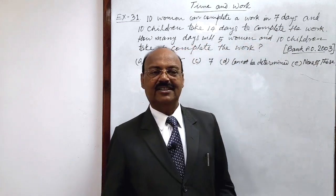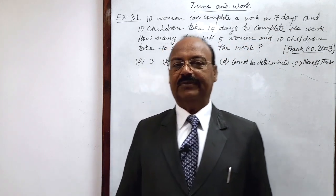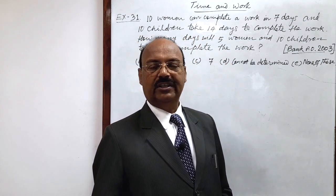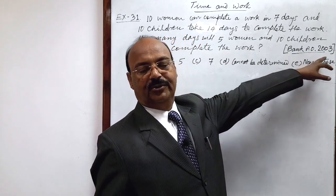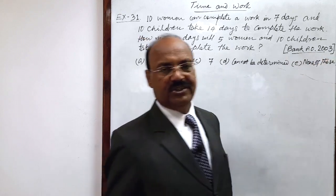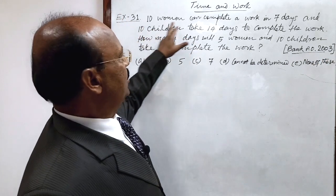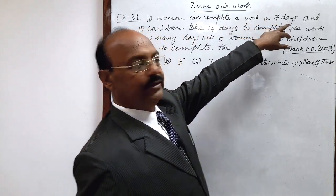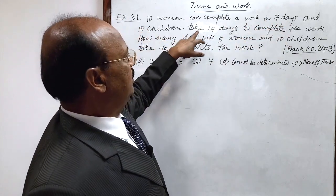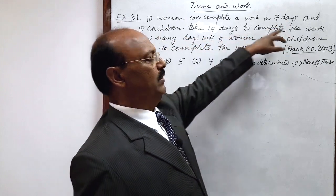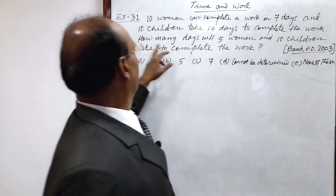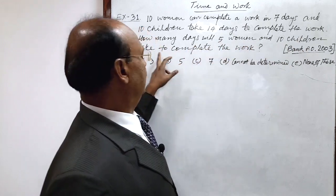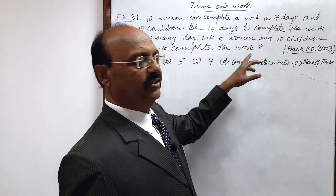Welcome students. Let us see a very interesting and important question from the topic time and work. This question has been asked in the Bank Probationary Officer Examination in the year 2003. The question is: 10 women can complete a work in 7 days and 10 children take 14 days to complete the same work. How many days will 5 women and 10 children take to complete the work?